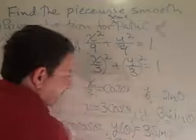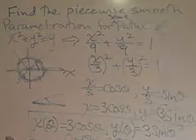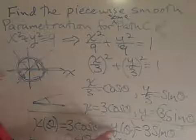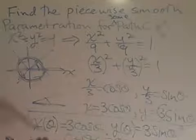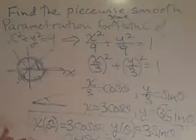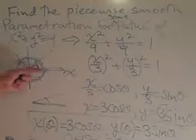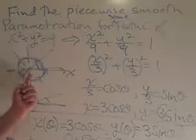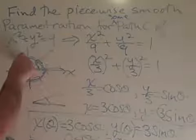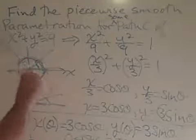Eventually, you have an answer, and there it is. You really shouldn't just say what x of theta is and what y of theta is. You really should mention the path. It's just a matter of saying that theta goes from zero all the way up to 2 pi.